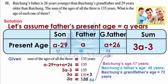The sum of ages of all three is 135 years, so we write the equation: (a − 29) + a + (a + 26) = 135. Combining like terms gives 3a, and combining constants: −29 + 26 = −3, so the equation becomes 3a − 3 = 135. Transposing −3 to the right side: 3a = 135 + 3 = 138.